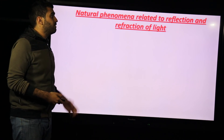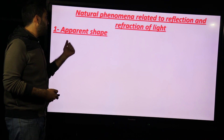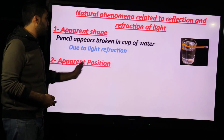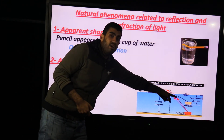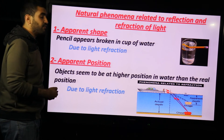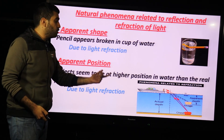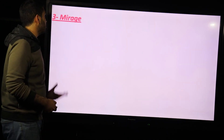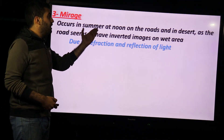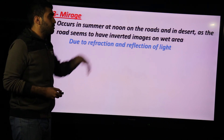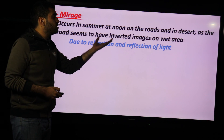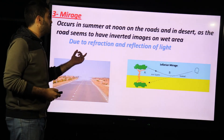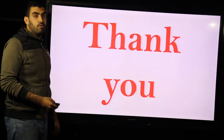Natural phenomena related to reflection and refraction of light: number one, apparent shape — a pencil appears broken due to light refraction. Number two, apparent position — an object seems to be at a higher position than its real position due to light refraction between different media. The last one is mirage: a phenomenon that occurs in summer at noon with high temperatures on roads and in deserts, where the road appears to have an inverted image on a wet area. This occurs due to the refraction and reflection of light rays.